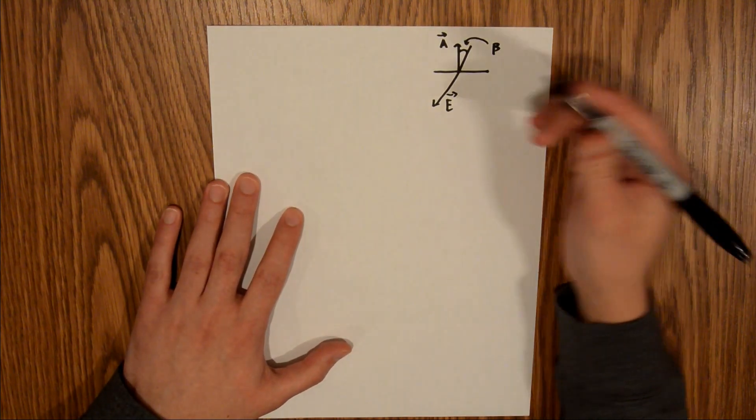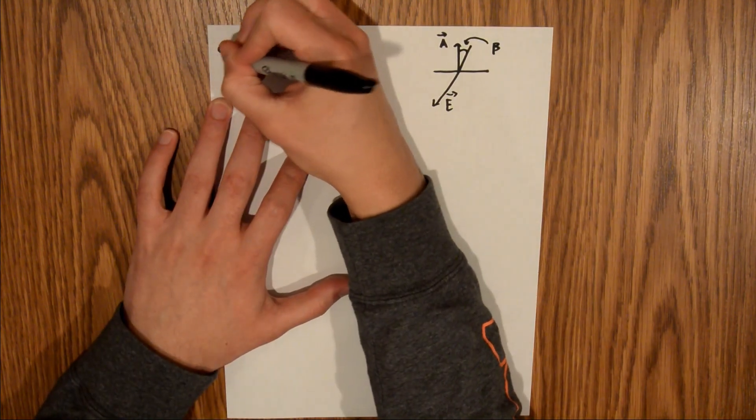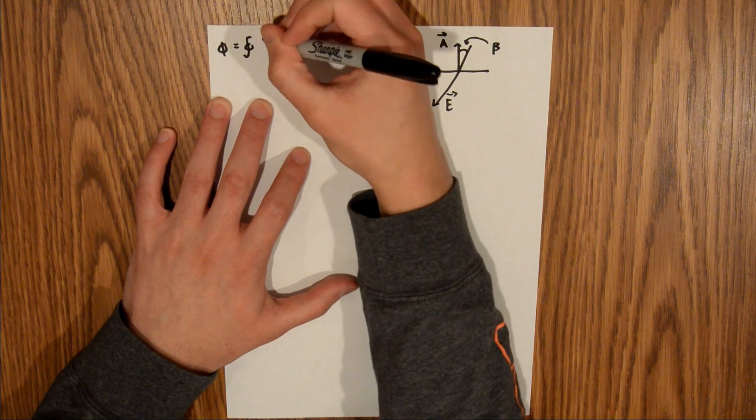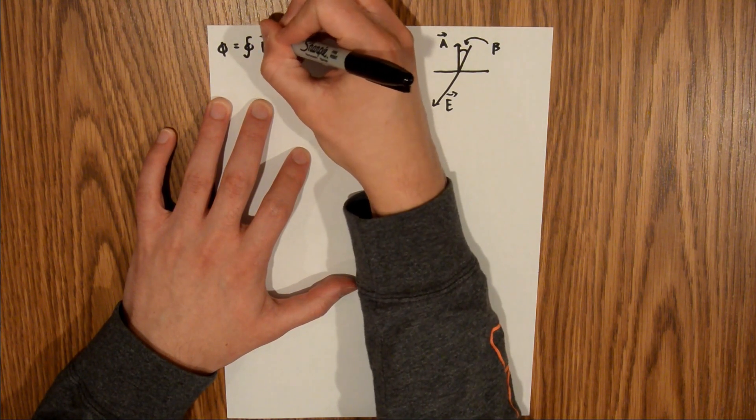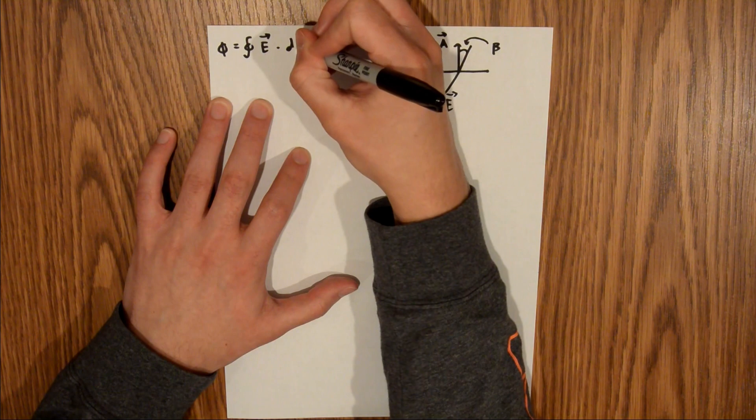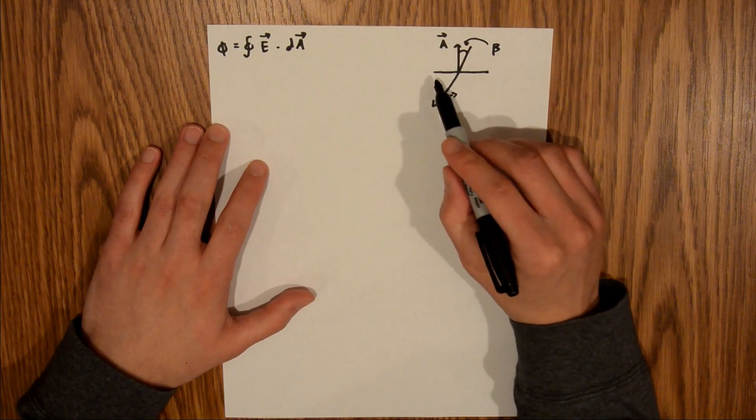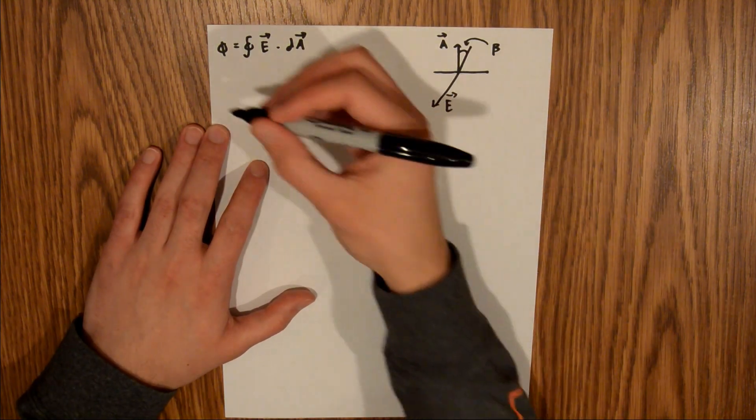We know that flux is equal to the integral of the electric field dotted with the differential area. But since we have a planar surface, we can simplify this.